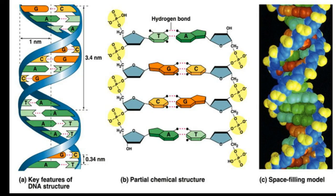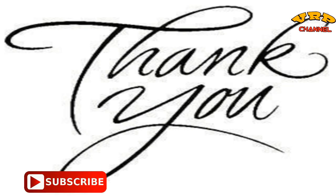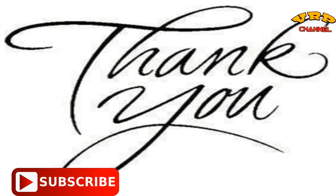Finally, two such polynucleotides are held together oppositely by hydrogen bonds developed between the nitrogen bases of complementary strands. The specific base pairing is finally established, forming a DNA double helix. Thanks for watching — don't forget to subscribe to my channel. Have a good day!